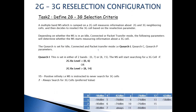Now let's look at the criteria by which the 2G cell selects a 3G cell. The first criteria of concern is the QSearch idle parameter. Reselection occurs in idle mode, and what determines if the 2G cell should start searching for a 3G cell is the QSearch idle parameter. If this parameter is set to 0, this implies an RX level value of minus 98 dBm — meaning if the measured RX level is less than minus 98 dBm, the mobile station should start searching for a 3G cell.